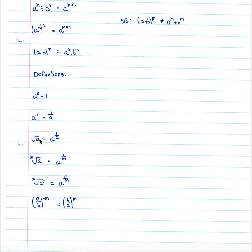The square root of a variable is simply the variable to the power of a half, and the mth root of a variable is the variable to one over m. So the cube root of a is a to the one over three. If you have the mth root of a to the power of n, it is simply a to the exponent n over m. If you have (a over b) in a bracket to the negative m, you can simply flip the fraction to make it a positive exponent.